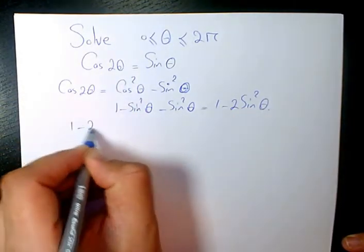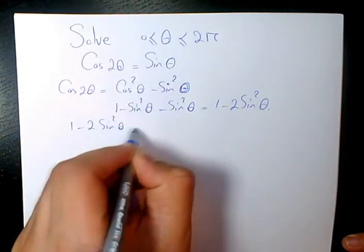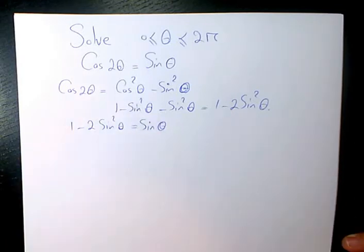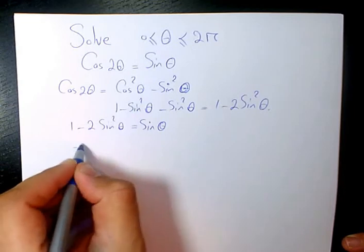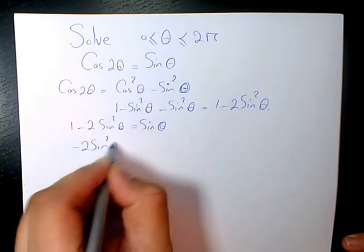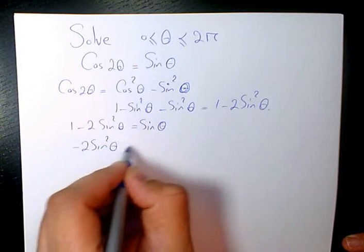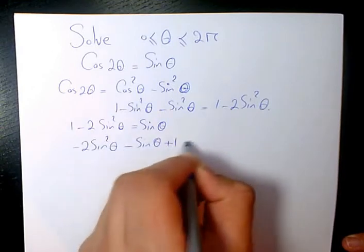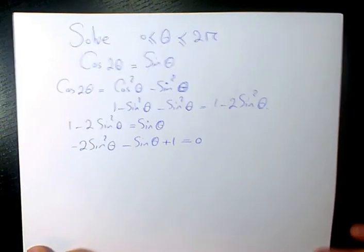Then 1 minus 2 sine squared theta equals sine theta, and then I move this one to the left hand side: negative 2 sine squared theta minus sine theta plus 1 equals 0. Now I need to use AC method.